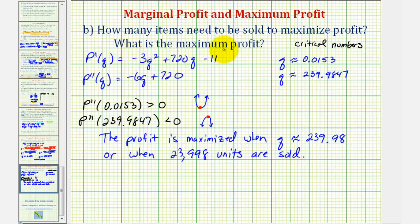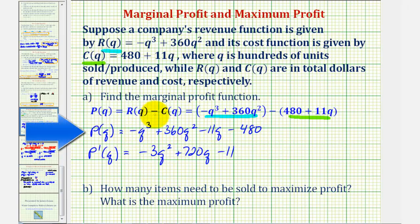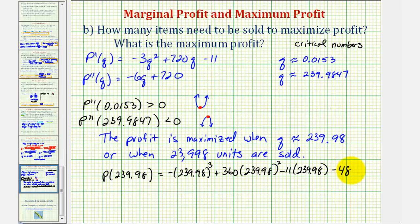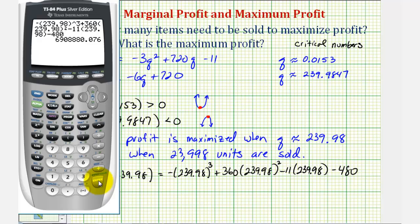They also asked for the maximum profit, so we evaluate the profit function when q is approximately 239.98. Using our cubic profit function and the calculator, rounding to the nearest cent, the maximum profit is $6,908,880.08.